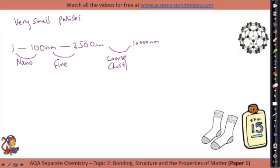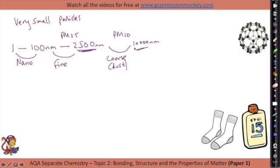These fine and coarse particles have a shorthand notation: fine particles are called PM2.5, in relation to their maximum size, and coarse particles are PM10, again in relation to their maximum size.